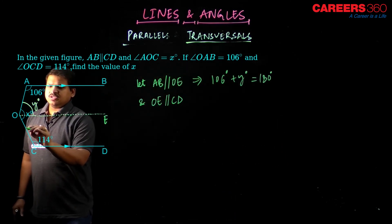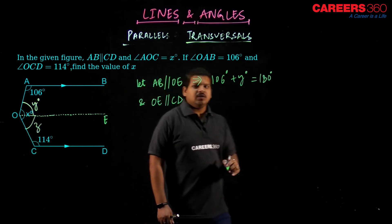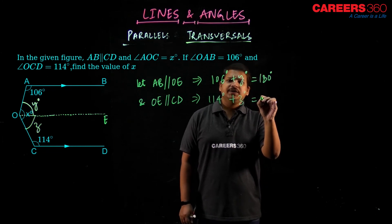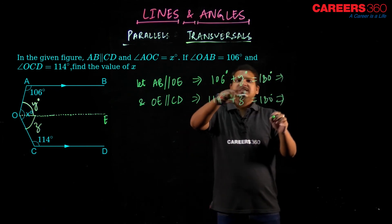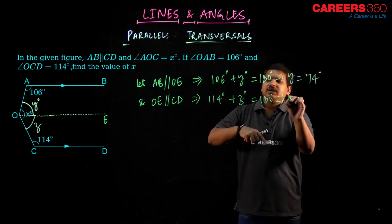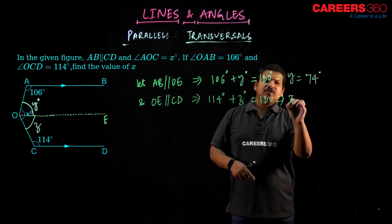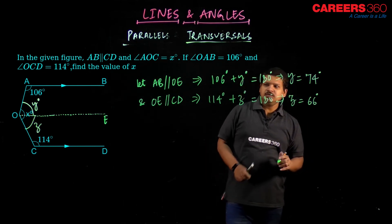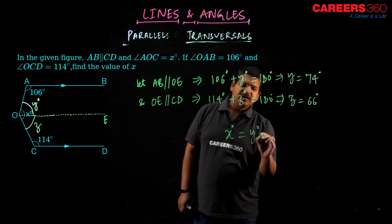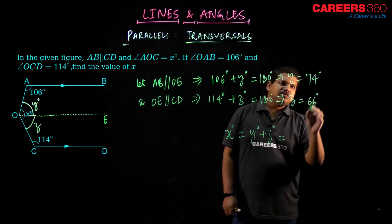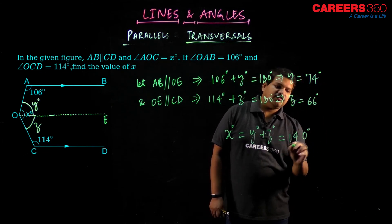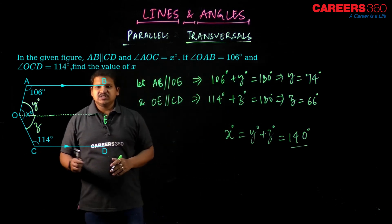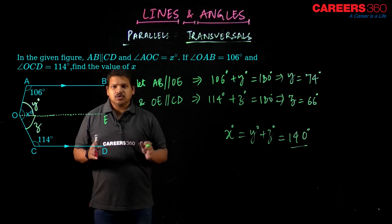If AB is parallel to OE, then 106 degrees plus Y degrees equals 180 degrees, because they are a pair of internal angles. So Y equals 74 degrees. Similarly, if I assume this other angle as Z, then 114 plus Z equals 180 degrees, so Z equals 66 degrees. Now, X equals Y plus Z, which gives X equals 140 degrees. That is how we obtain the value of X. Thank you so much.